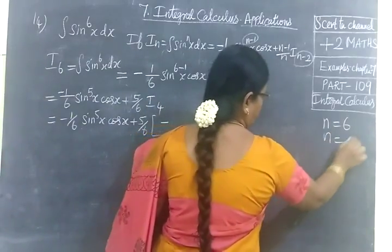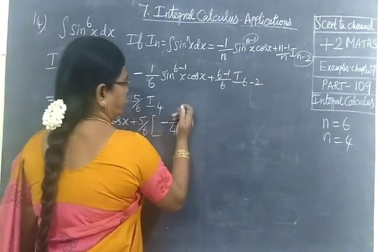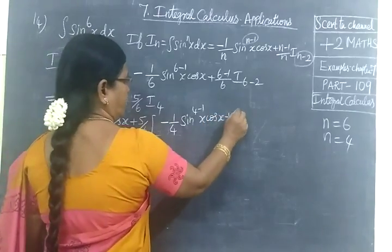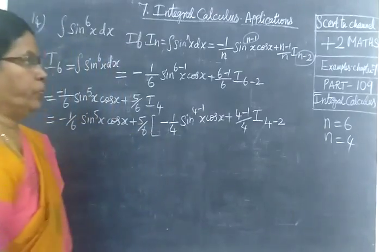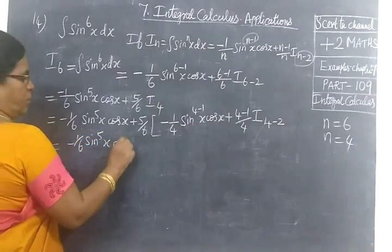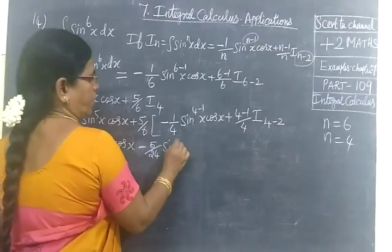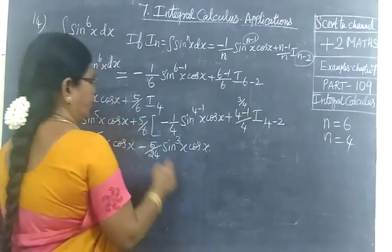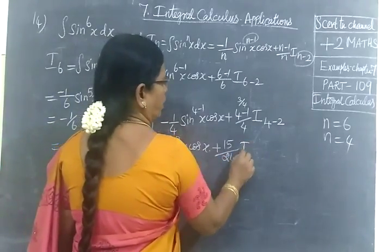For I₄, n equals 4: minus 1/4 · sin power 3x · cos x plus 3/4 · I₂. Substituting back, we get minus 1/6 · sin power 5x · cos x plus 5/6 times the result. Multiplying 5/6 by 3/4 gives 15/24.